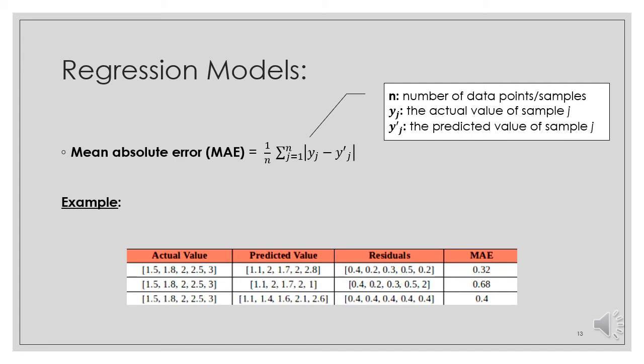To make this tutorial interactive and easy, I put an example on each regression model metric. First, I started with an example about mean absolute error. As we see, we have a table containing actual values, predicted values, residuals, and mean absolute errors. Residuals is the absolute value of the difference between actual value and predicted value. After finding the residuals, we can add the elements inside the residuals, then divide them by the number of data points. Here the number of data points are equal to 5, so that we can get the mean absolute error of this example.